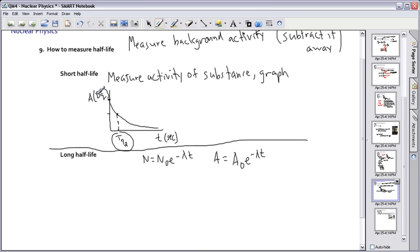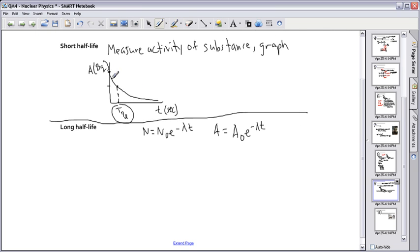If we graphed activity versus time, if it's a short half-life in seconds, we'll probably see something happening. It's no problem. But what if your activity doesn't change much over time? Because if your half-life is long, half-lives can be millions of years. So it's not like you're just going to sit there and wait a million years in order to be able to tell what your graph looks like. I suppose you could, but that'd be pretty boring.